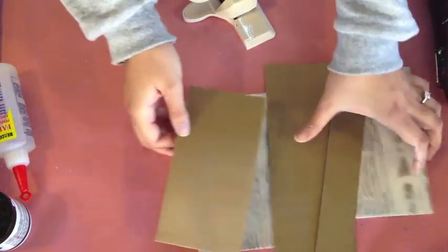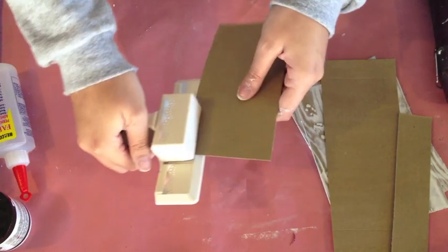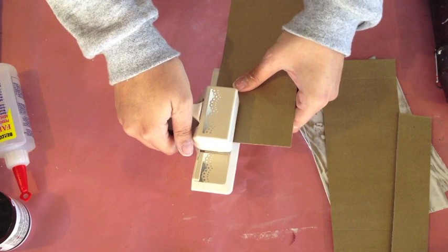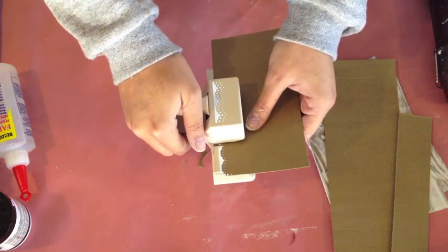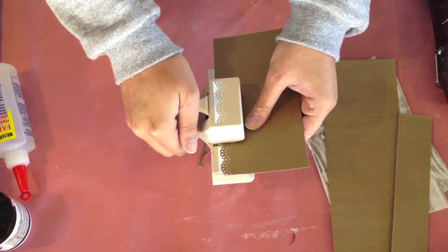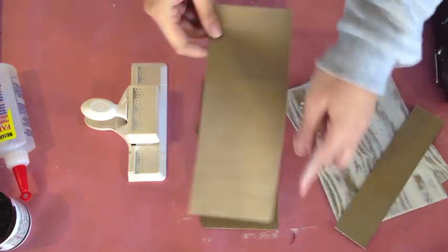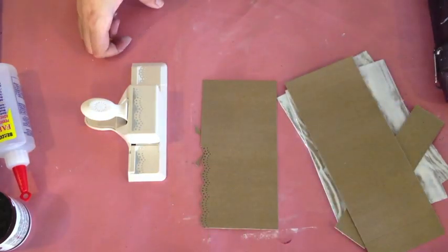This piece, you're going to do the same thing. You're going to score one inch from the right and left side, but not the top and bottom because you don't need to for that. And next, because I want to add something a little fancy to this, I'm going to go ahead and border punch these edges. I'm going to do the same thing with these two sides on this longer piece.